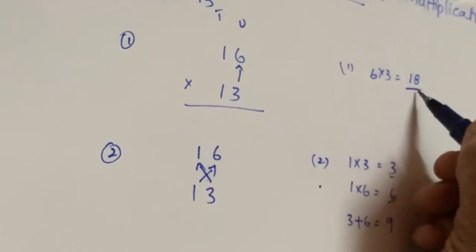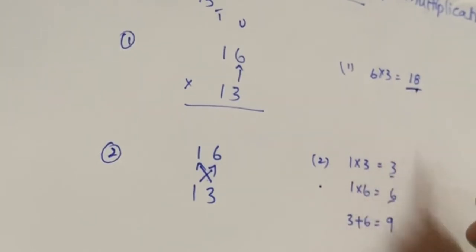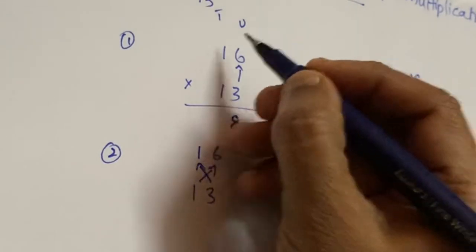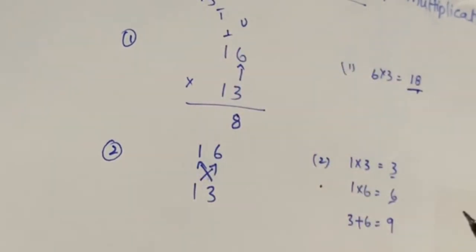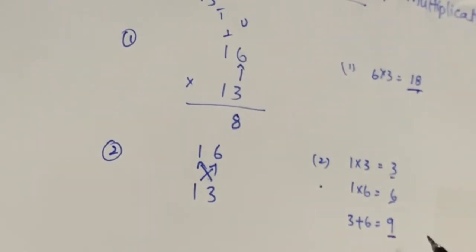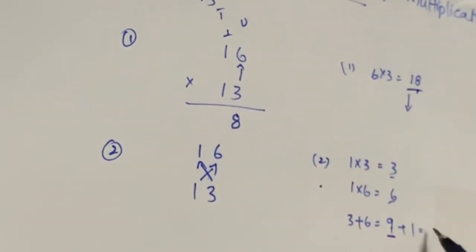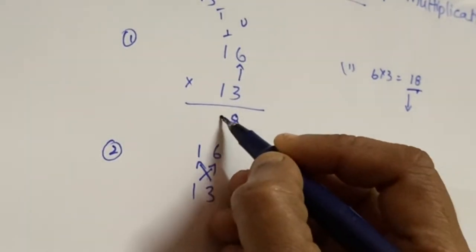From the first step we got 18, which is a two-digit number. So we write only the 8 here and carry over the 1. This carry-over is added to the second step answer: 9 plus 1 equals 10. Since 10 is also two digits, we write 0 here and carry over 1 again.